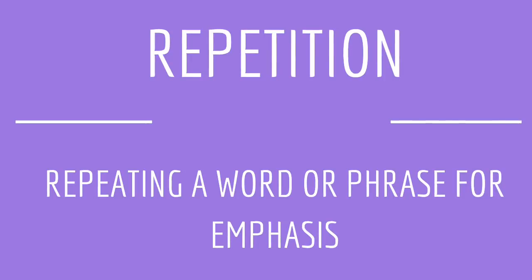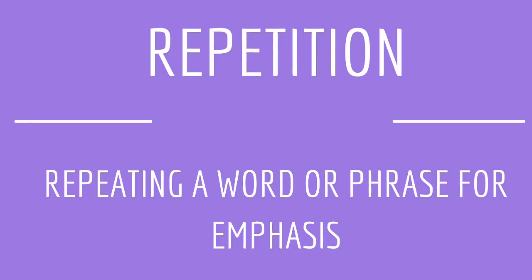If we stop short of the why — why the repetition is meaningful — then we haven't done the analysis justice. So we're going to look at examples of two different types of repetition, anaphora and epistrophe, to talk about why this particular type of repetition is actually significant to the text as a whole.